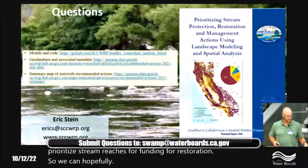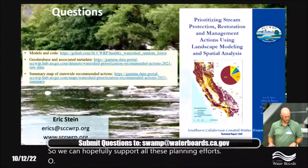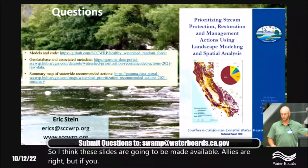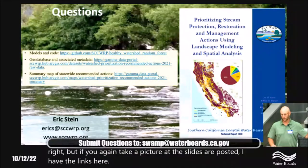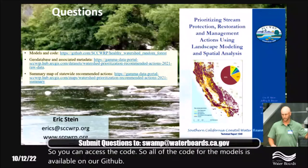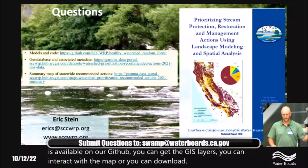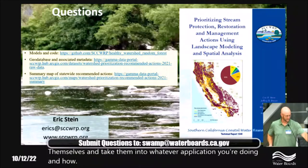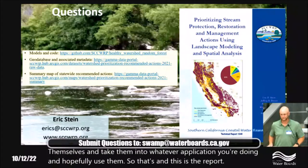That's the whirlwind tour through the tool, which working with the Healthy Watersheds Partnership will hopefully feed into the overall framework they've been developing, as well as supporting local efforts like the wetland recovery project in Southern California prioritizing stream reaches for restoration funding. The slides will be posted, and I have links here so you can access the code — all code for the models is on our GitHub, and you can get the GIS layers, interact with the map in ArcGIS Online, or download the shapefiles.